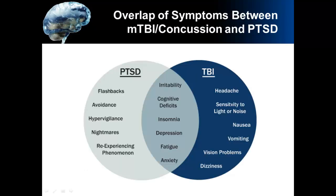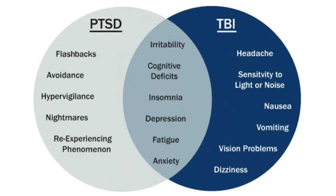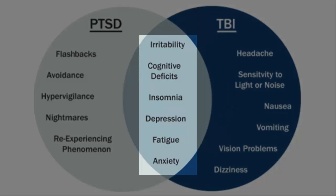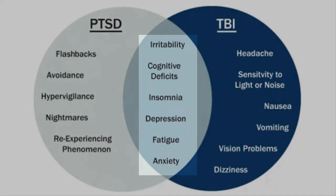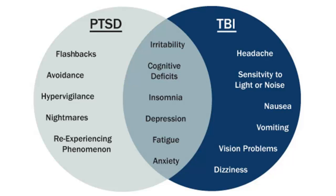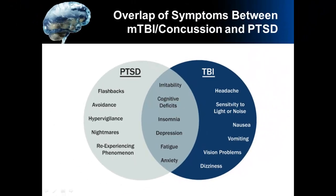There is an overlap of symptoms between a mild traumatic brain injury or concussion and post-traumatic stress disorder. Because of these overlaps, it's extremely important that the correct diagnosis is made. It is possible to have each condition independently without the other, or they can co-occur at the same time. The overlapping symptoms include irritability, cognitive deficits, insomnia, depression, fatigue, and anxiety. Notably, the three most common manifestations of post-concussion syndrome in military personnel — irritability, fatigue, and sleep disturbances — all fall within the overlapping symptoms of PTSD and mild traumatic brain injury.